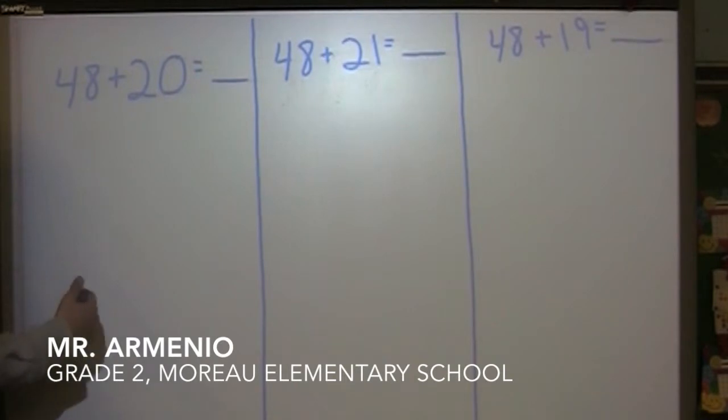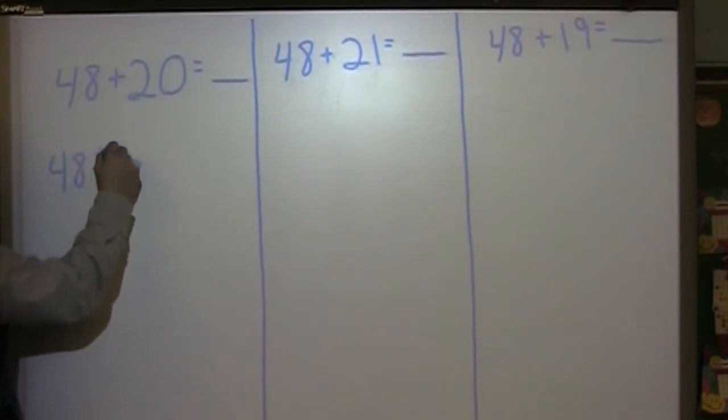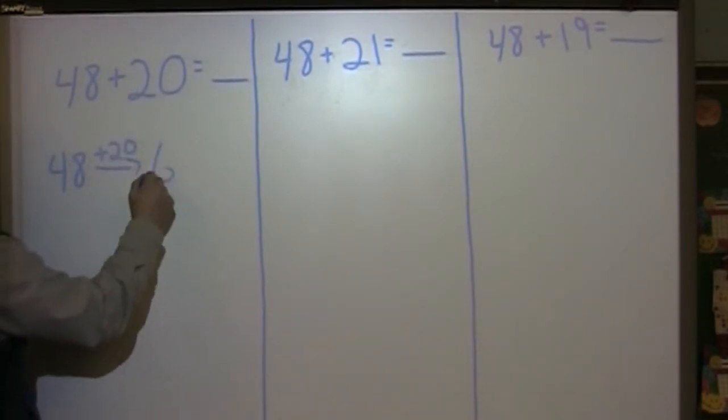So back here, this is review from the lesson before. So we have 48. We can add 20 using the arrow way and we will get 68.